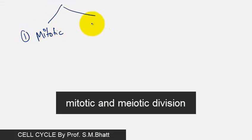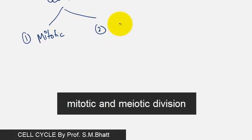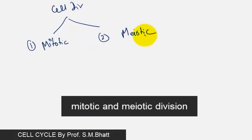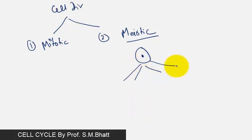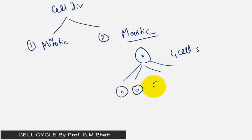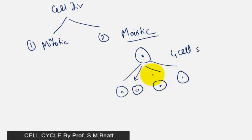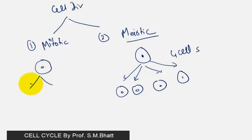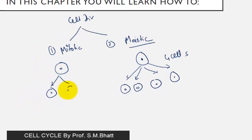In summary, there are two types: mitotic and meiotic. In meiotic division, one cell forms four cells. In mitotic division, one cell forms two cells.